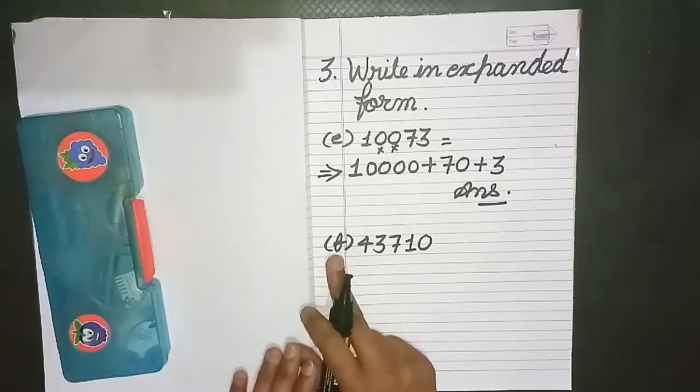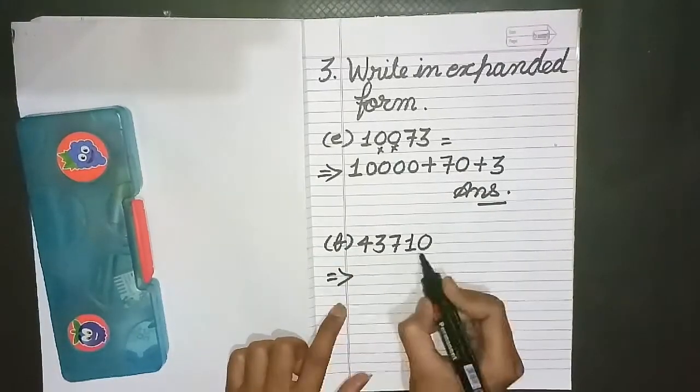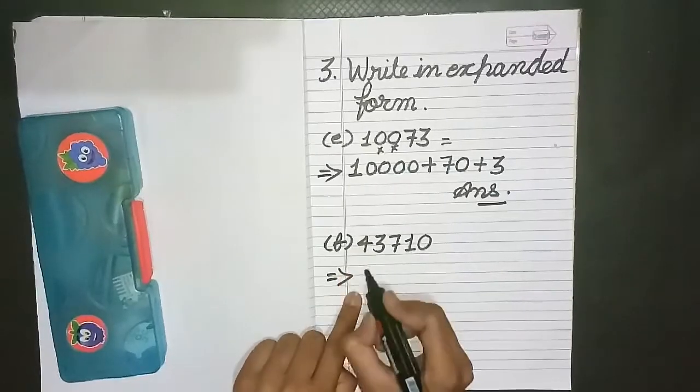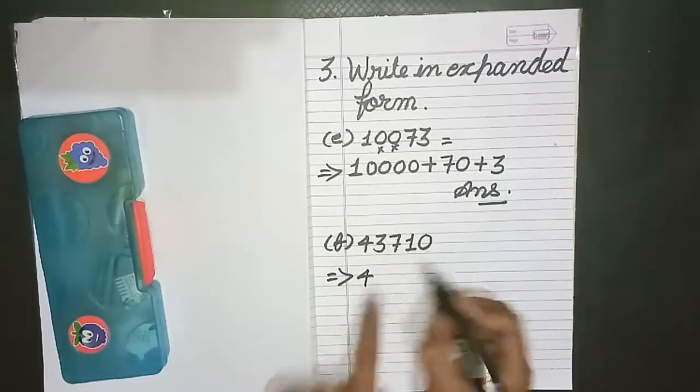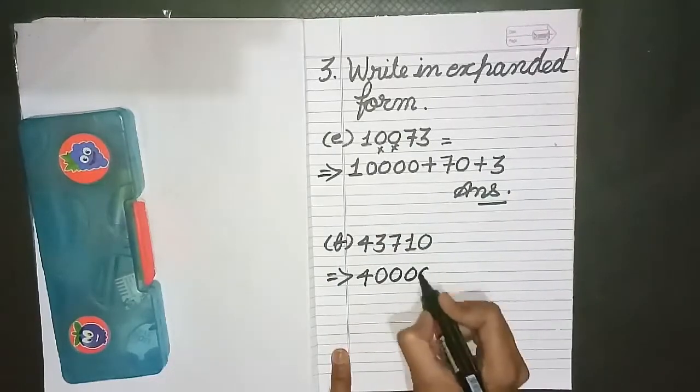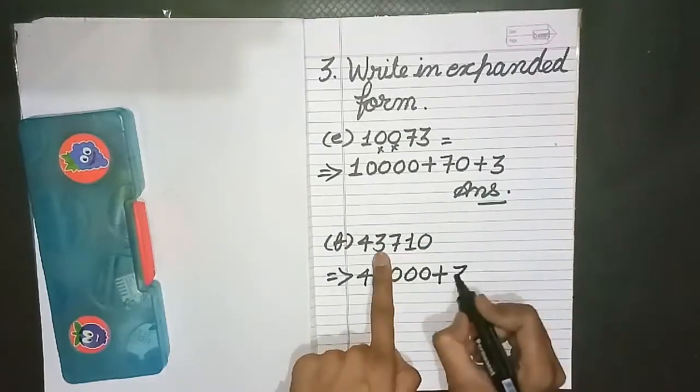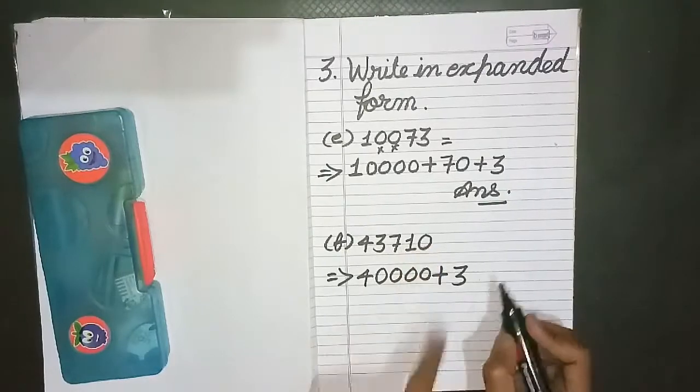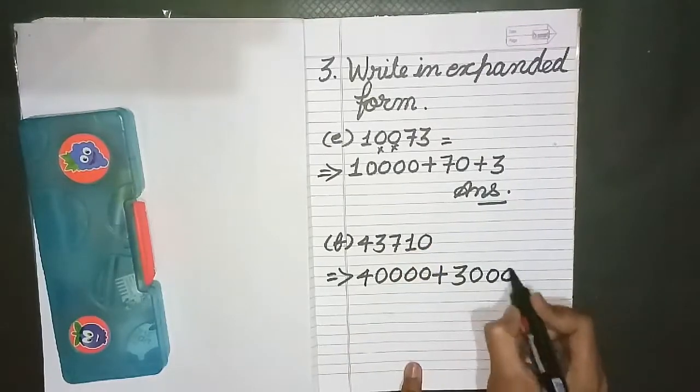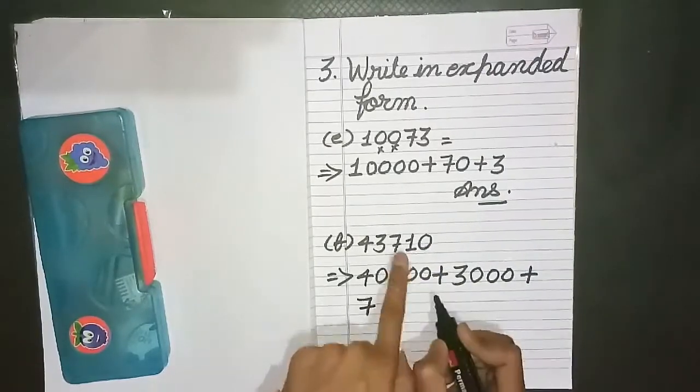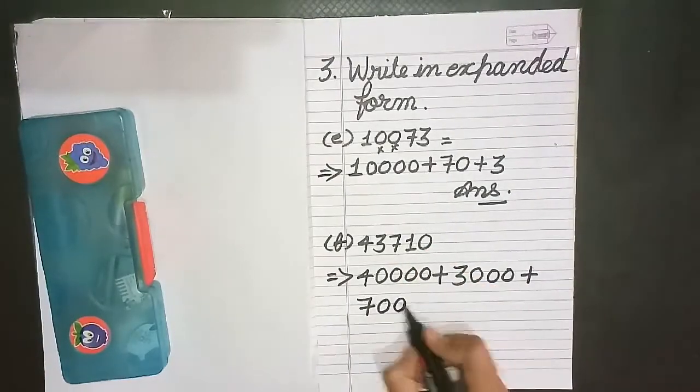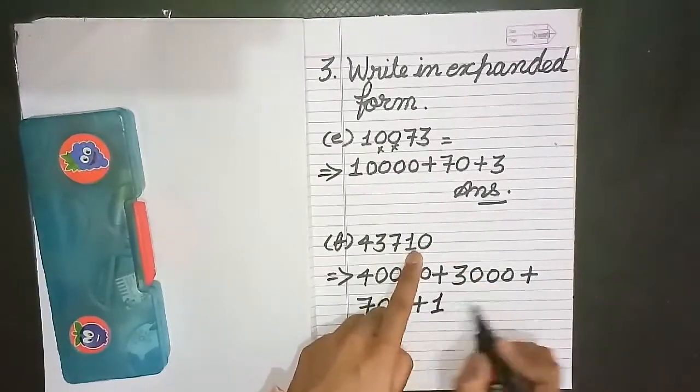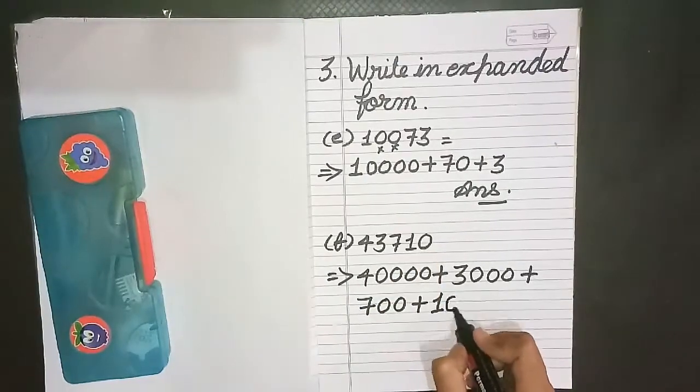Now similarly we will write this part in expanded form. So we have 43710. Here first digit is 4, so it has 4 digits at its right hand side, so we will add 4 zeros. Next is 3, and it has 3 digits at its right hand side, so we will add 3 zeros. Next digit is 7, it has 2 digits at its right hand side, so we will add 2 zeros. Next digit is 1, so it has 1 zero. Last is 0, we will neglect.